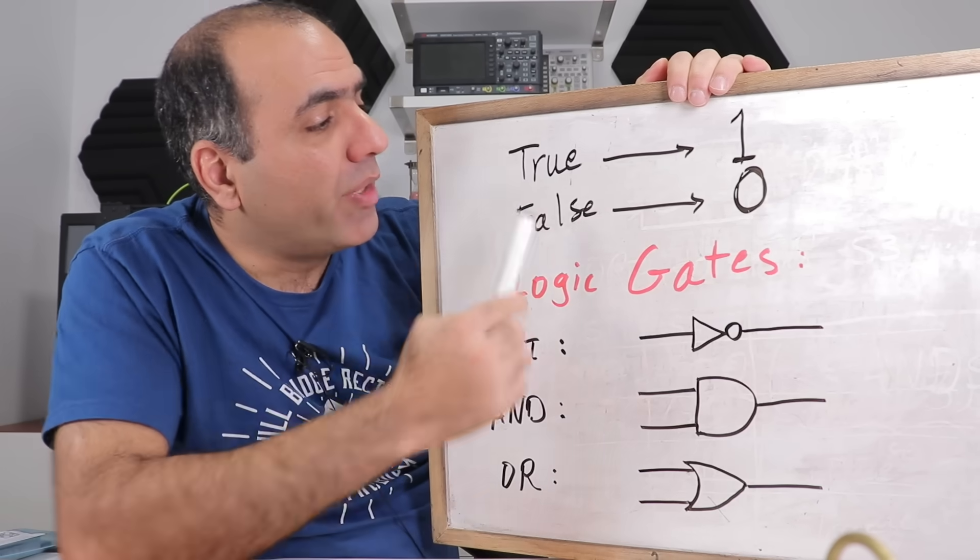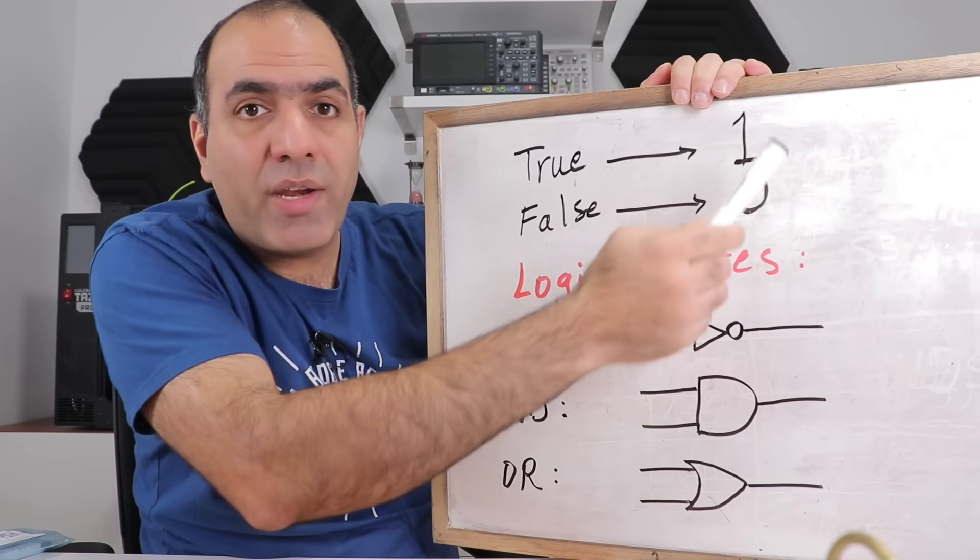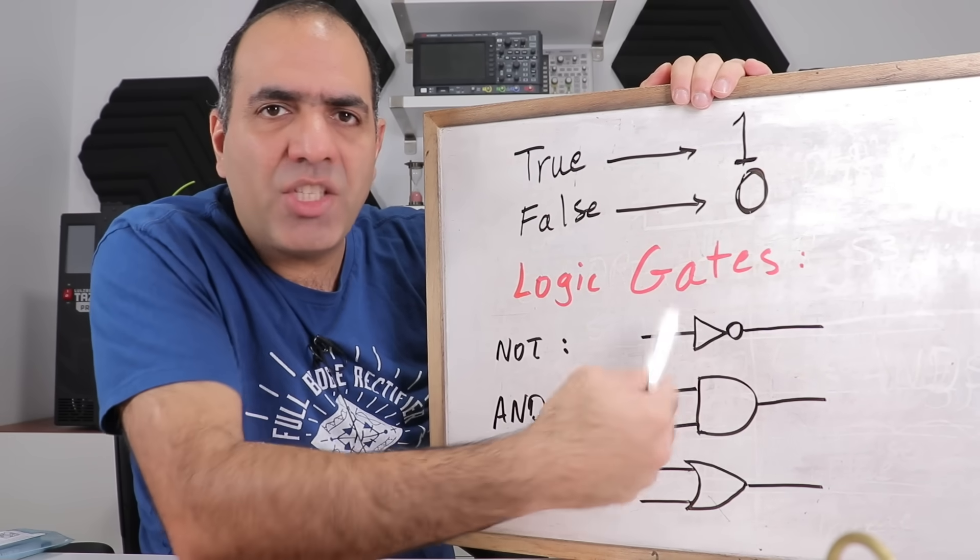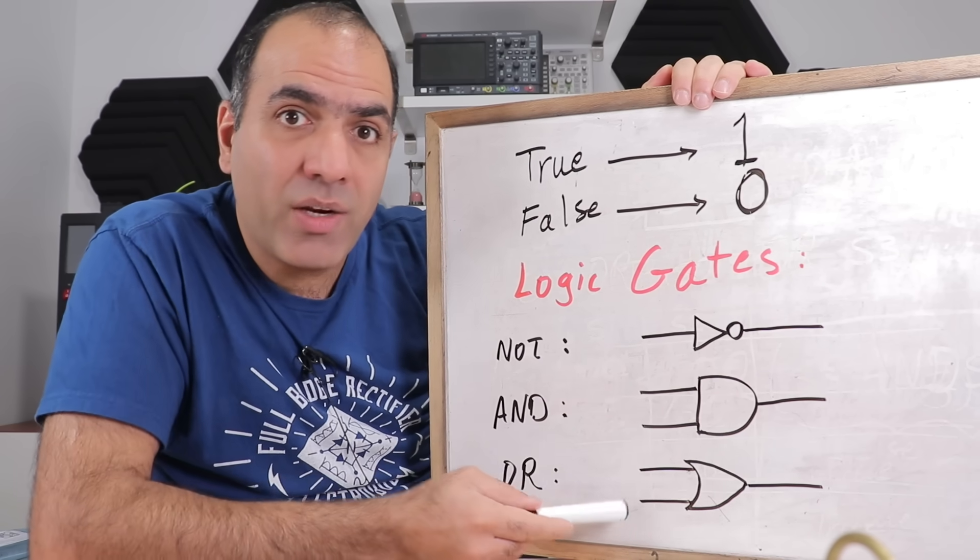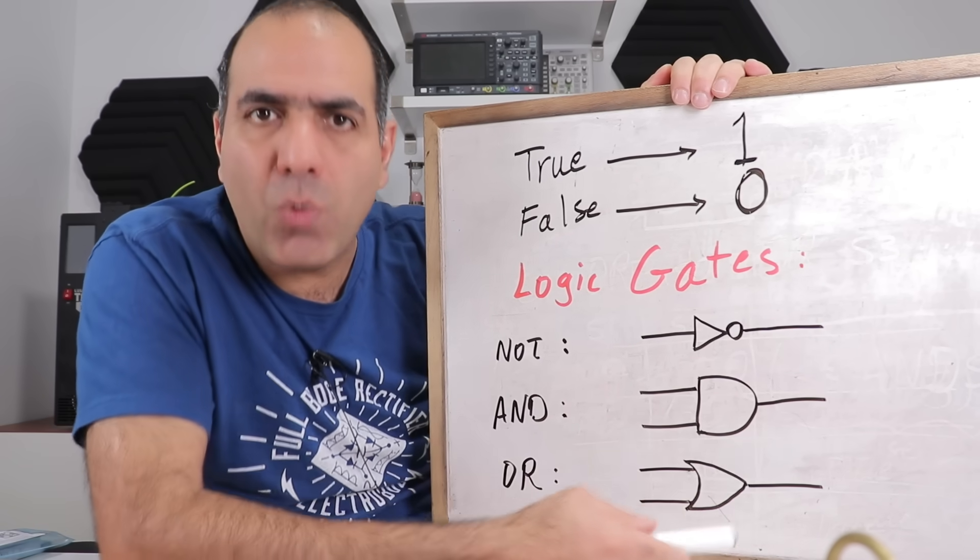Now to switch to digital logic, we replace true and false with one and zero, and call our basic operations gates, which are shown with these symbols that take zero and one as input and output zero and one.